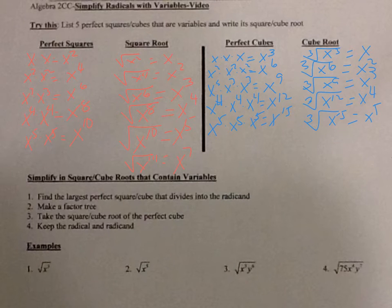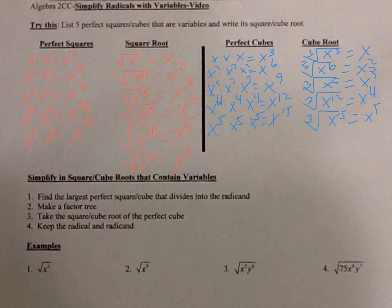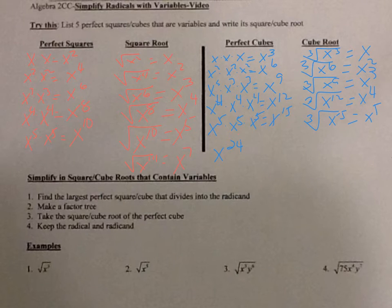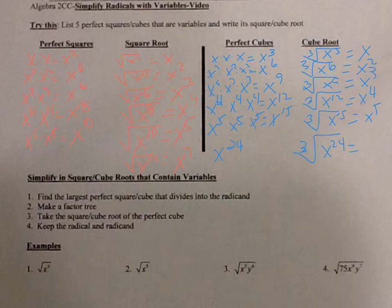For perfect squares I divide by two because I'm looking for two numbers multiplied together, and for perfect cubes I divide by three because I'm looking for something multiplied three times. For example, x to the twenty-fourth is a perfect cube because 24 is a multiple of three. So the cube root of x to the twenty-fourth — take 24 divided by three — gives x to the eighth.